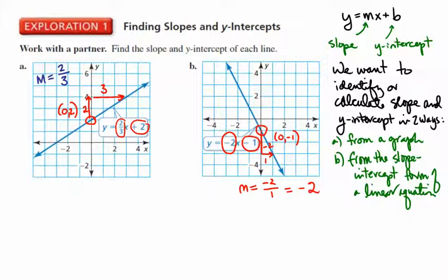In the equation, the number multiplied by x is the slope, and the number that we add or subtract at the end is the y-intercept. So we can see them in the graph and in the equation. That's the very first thing we want to be able to identify when working with straight lines — can we find the y-intercept, and can we measure what the slope is?